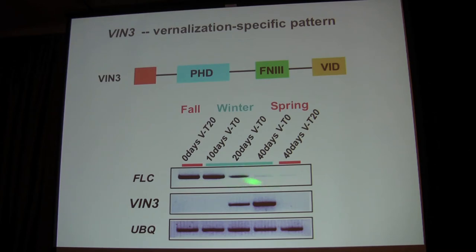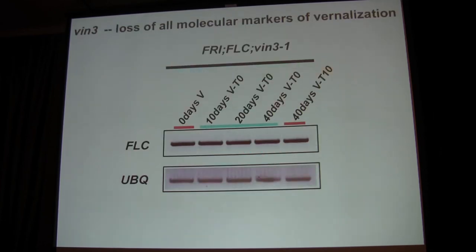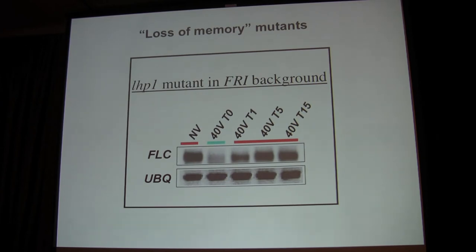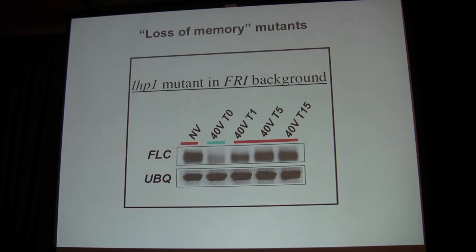VIN3 turning on correlates with FLC turning off. VIN3 doesn't stay on though — once you put it back into warm conditions, back to spring, it turns off. But FLC stays off, even though VIN3 is no longer present. In a VIN3 mutant, FLC just doesn't turn off in the cold — nothing happens. There's another class of mutants, which we call loss-of-memory mutants, where FLC actually turns off in the cold, but then it comes back on again when plants are placed in the warm — it doesn't stay off in the equivalent of spring. These define different categories of genes responsible for the whole system of FLC getting turned off and staying off.